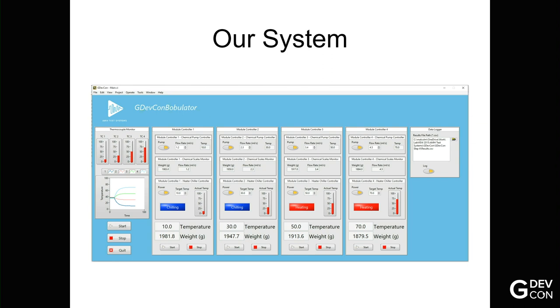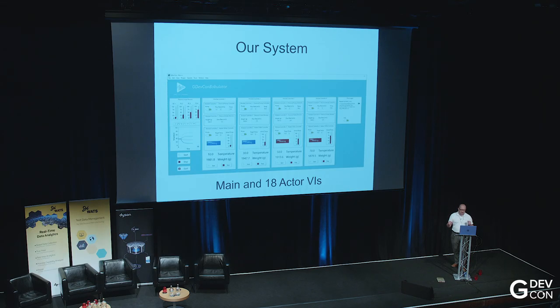That's our system, the GDevCon Bobulator. It's just something I've made up. What we have is on the left-hand side, we've got some temperature monitors. In the middle, we've got four modules which are doing exactly the same thing. They've got a chemical pump and some chemical scales, so you know how much chemical you're using. And you've got a heater-chiller unit, so that's moderating the temperature. But they're the same, but they're independent of each other. One, two, and three, and four. And on the far side, you've got a data logger. So really, that's a main VI and 18 active VIs. But really, this is about scaling to any size you want. That's hopefully the beauty of this system.